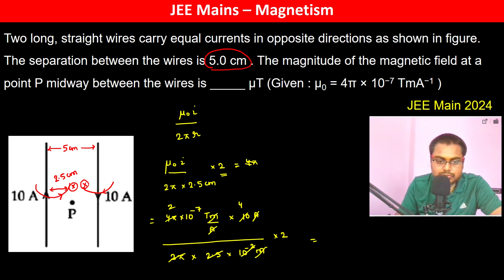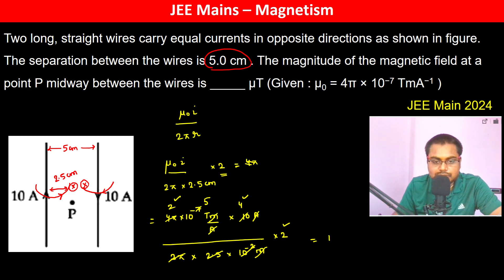The 10⁻² cancels to give 10⁻⁵. Then 2 × 4 = 8, and 8 × 2 = 16, giving 16 × 10⁻⁵ Tesla, which is 160 × 10⁻⁶ Tesla, or 160 microtesla.